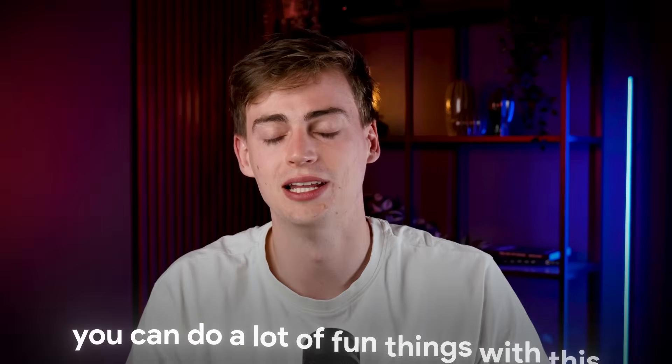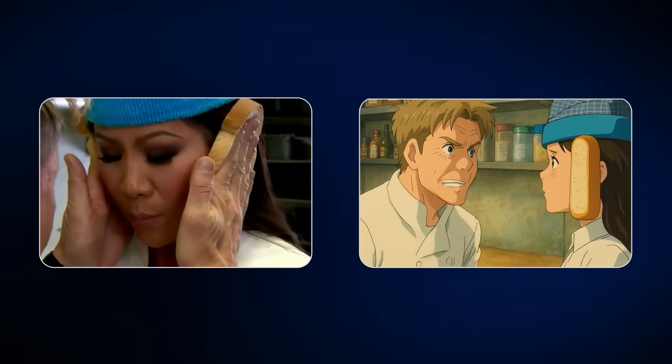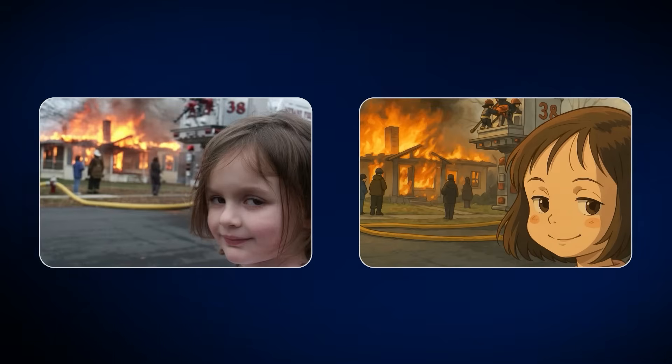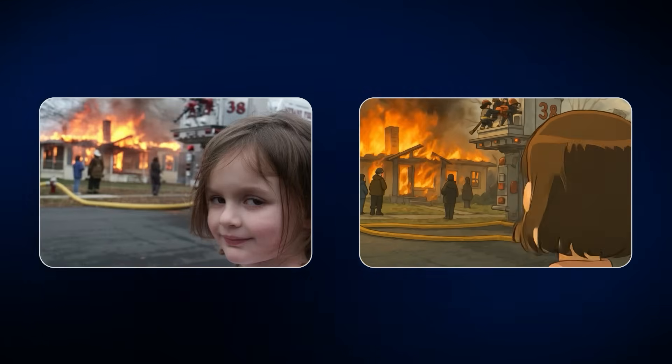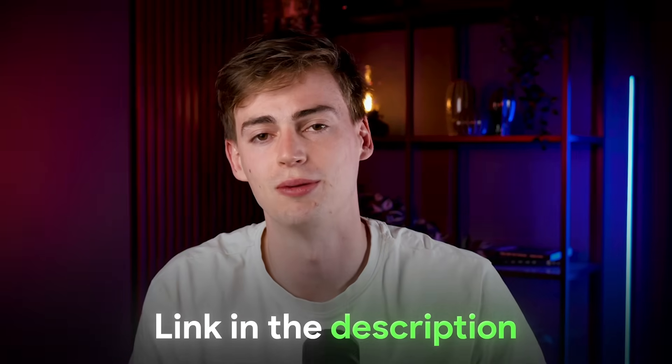This might not have been the perfect video to demonstrate, but this is essentially how it works. You can do a lot of fun things with this, like generating memes — for example the Gordon Ramsay idiot sandwich clip. Keep in mind, you don't have to do this with Ghibli-style images — you can do this with any other type of image. If you want to try Kling yourself, click the link in the description below. And if you want to learn more about the Kling 1.6 Elements feature, click the video on screen now and I'll explain in depth how it all works.